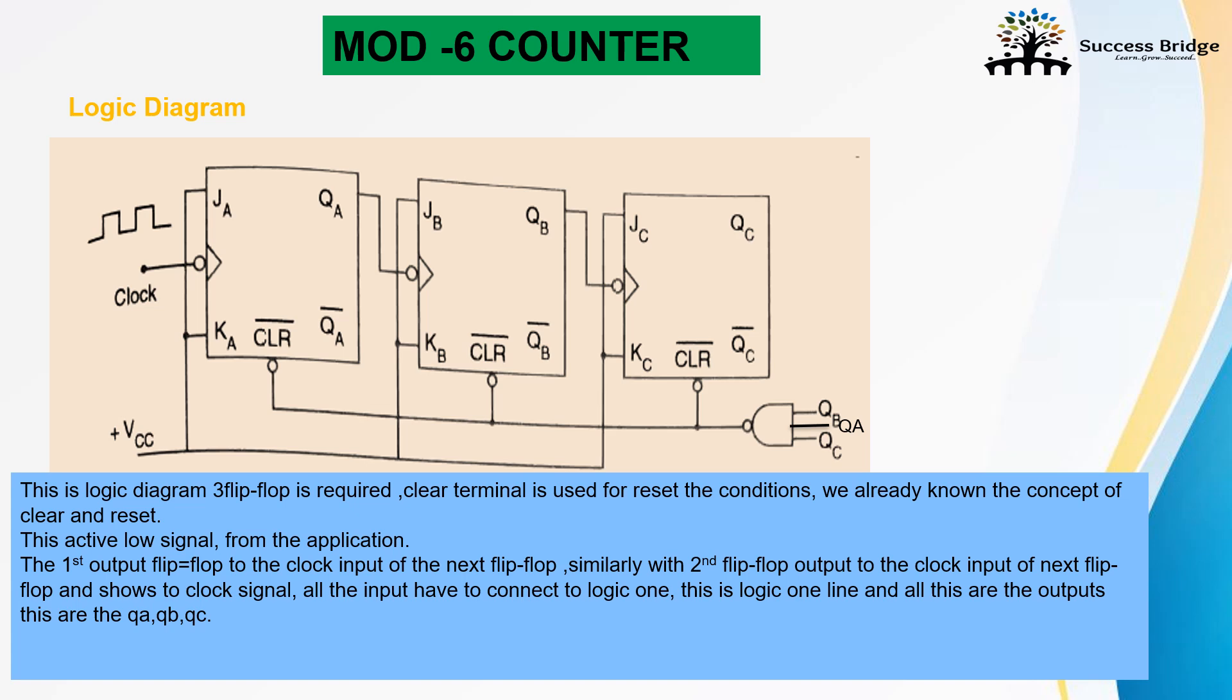The second flip-flop output is connected to the next flip-flop. Now, these are the clear signals. By using the AND gate, we can reset our signal to back to 000. By considering when we get 110, it should be reset. So, NAND gate is used. This is the logic diagram of mod 6 counter. Thank you.